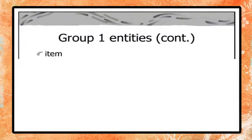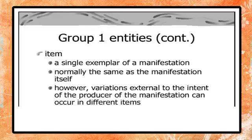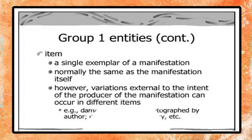An item is a single example of a manifestation. When books are published, multiple copies are produced — different copies of that book are different items. For example, a library copy is an item, and an autographed copy by the author is another item.